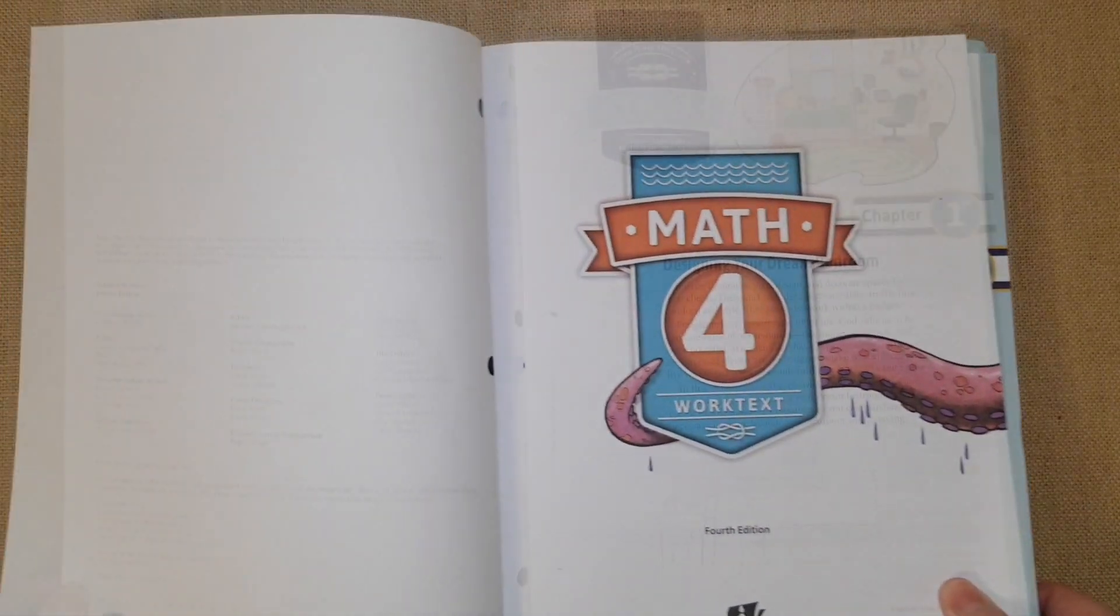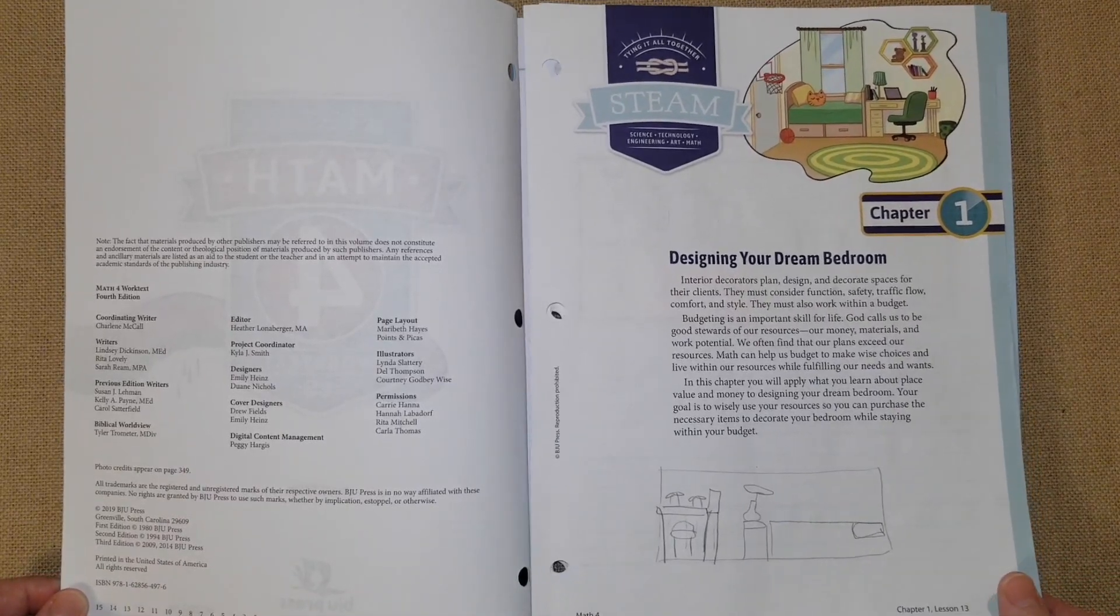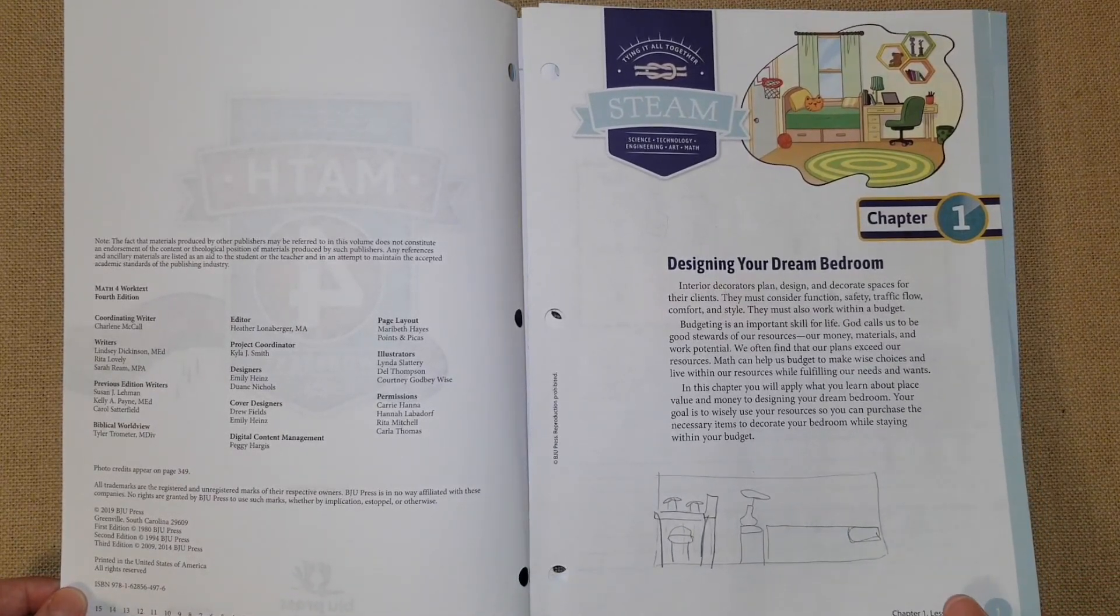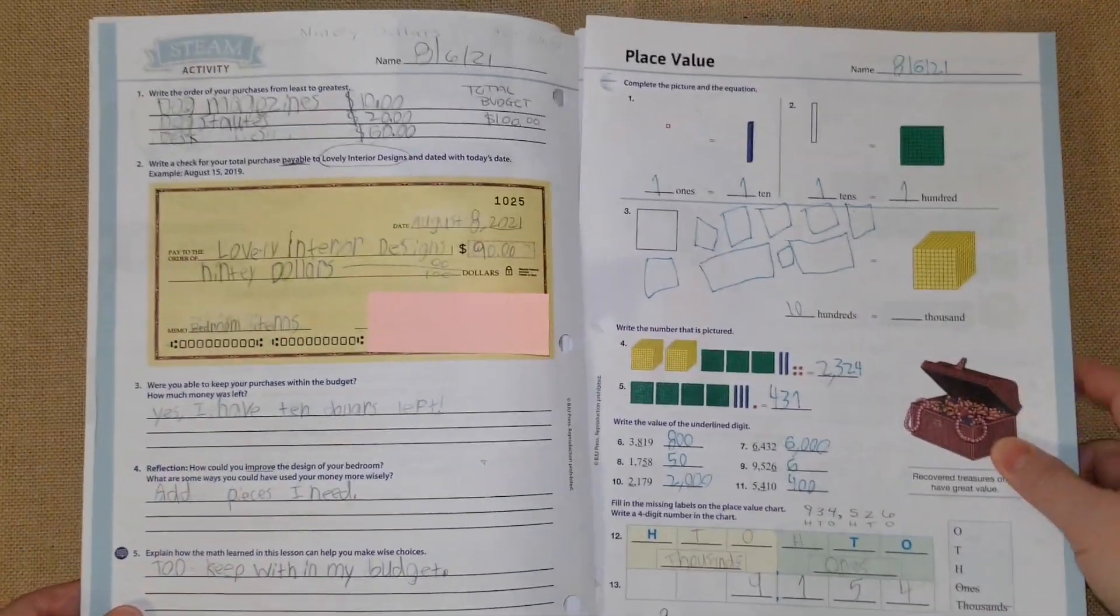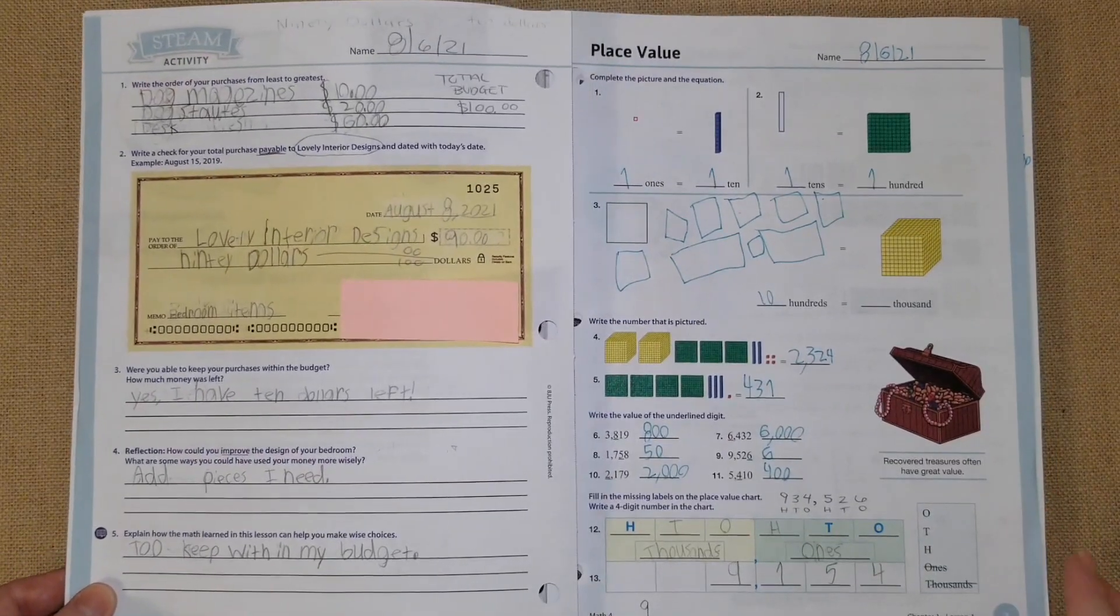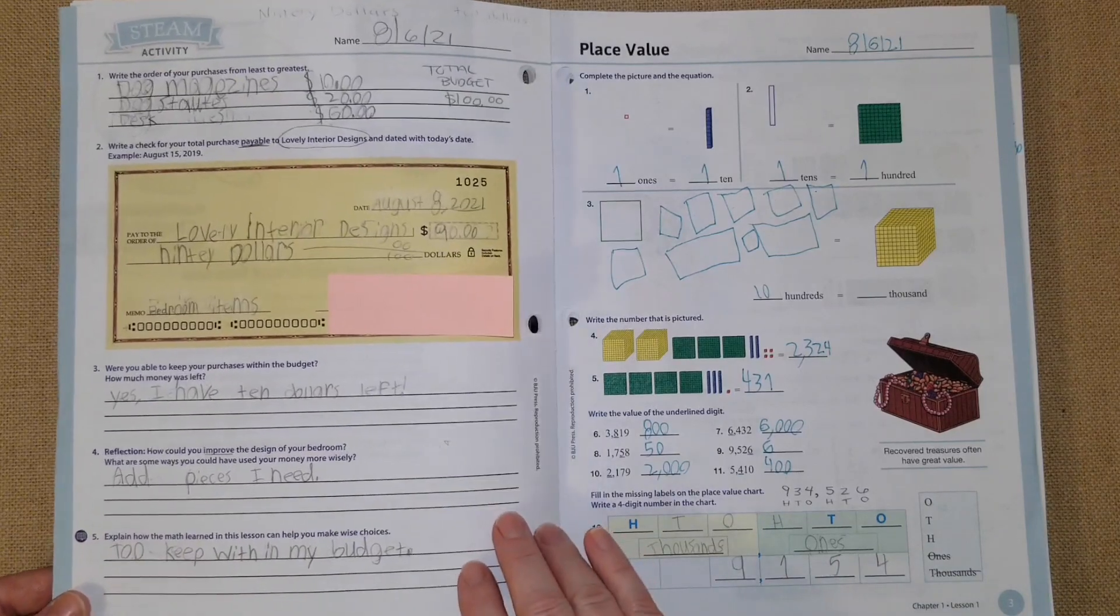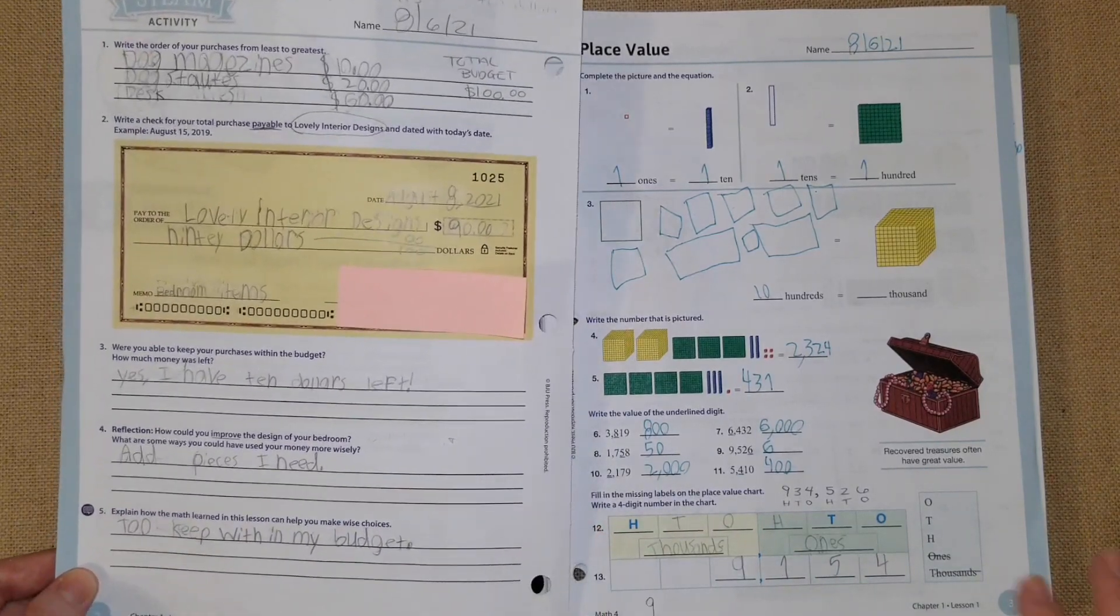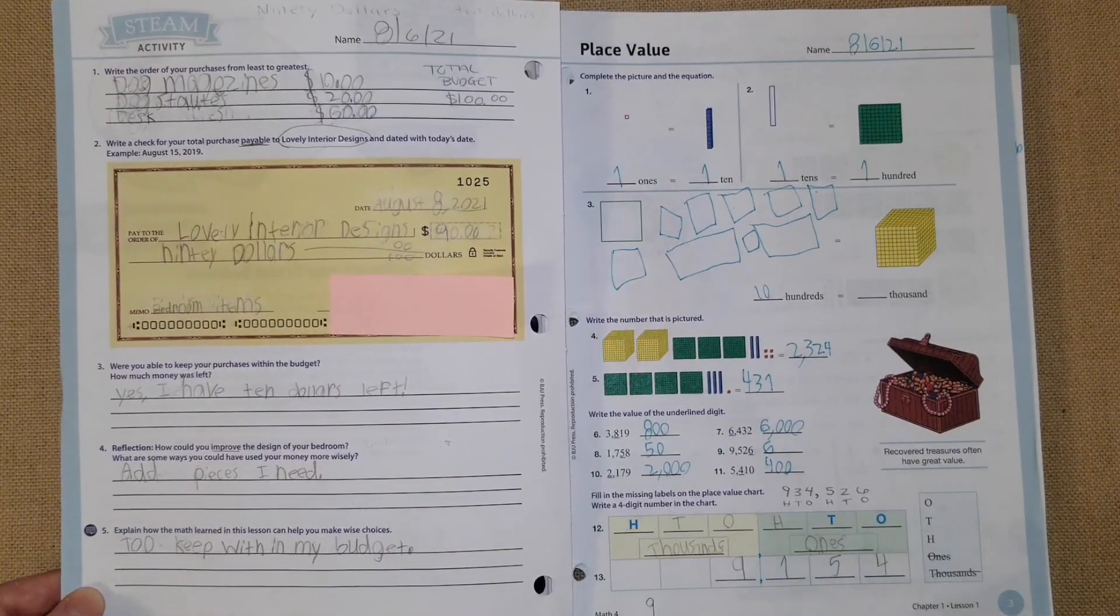The inside of chapter one is about designing your dream bedroom. STEAM represents science, technology, engineering, art, and math. They had her learn how to write her own check, which I think is very valuable because writing a check is something that they should be able to do.